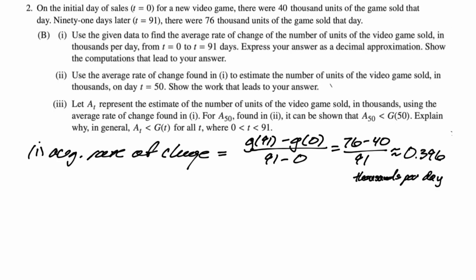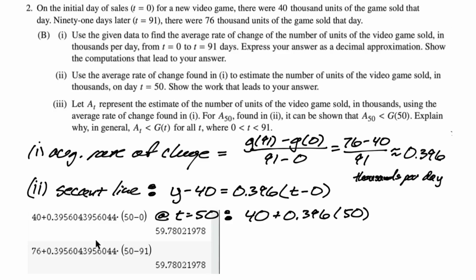The next part, use the average rate of change found in part one to estimate the number of units of the video game sold on day 50. Show the work that leads to your answer. So what we're going to do is we're going to write a secant line. Secant lines are a big deal. They're just the algebra 1 lines that you learn. They go through two points. So I'm saying y minus 40 is our slope, and then the quantity t minus 0, because on day 0 they sold 40. You also could use the ordered pair, so you could have written y minus 76 equals 0.396 quantity t minus 91. Either one will give exactly the same result.